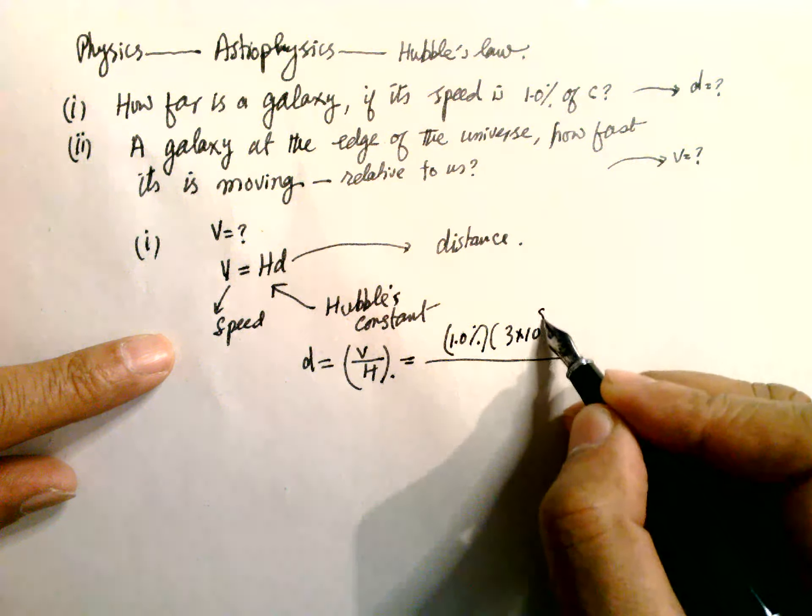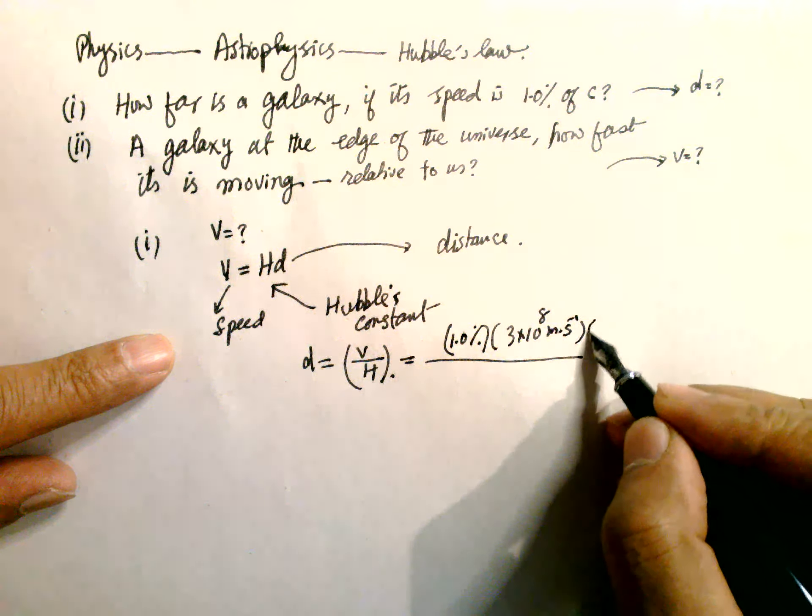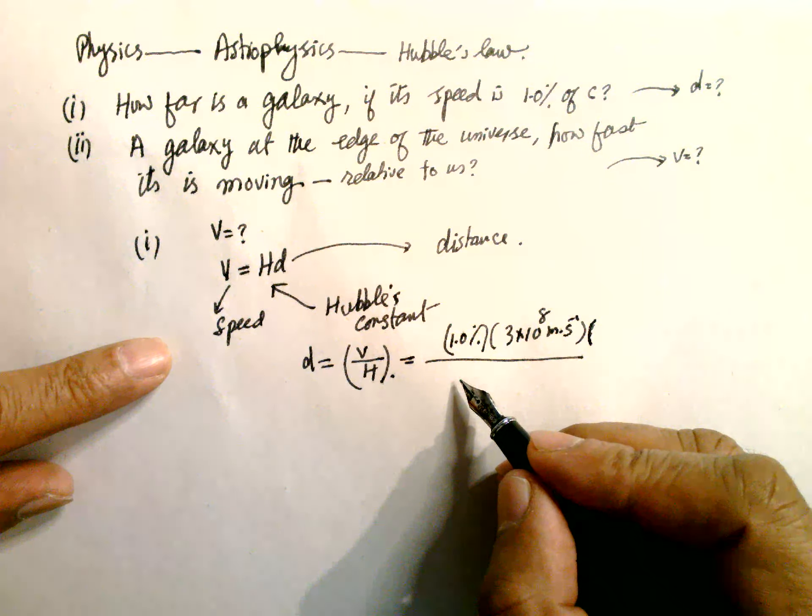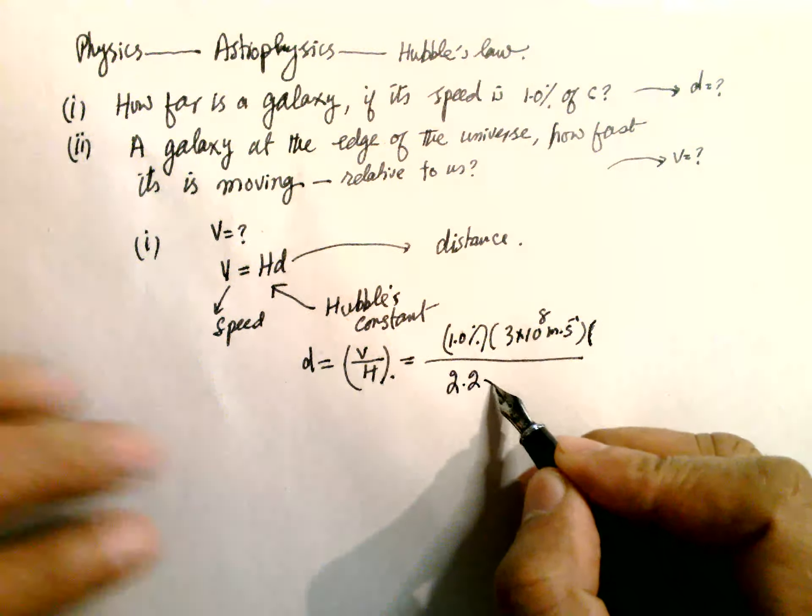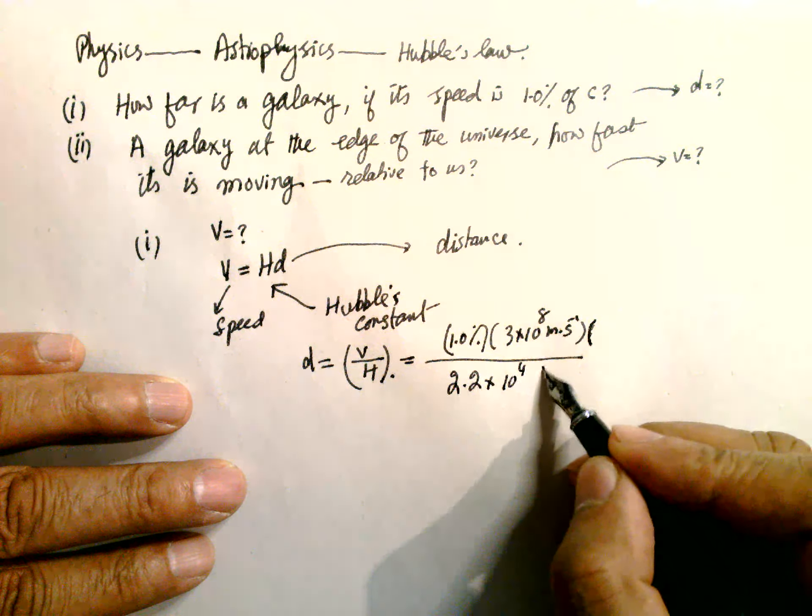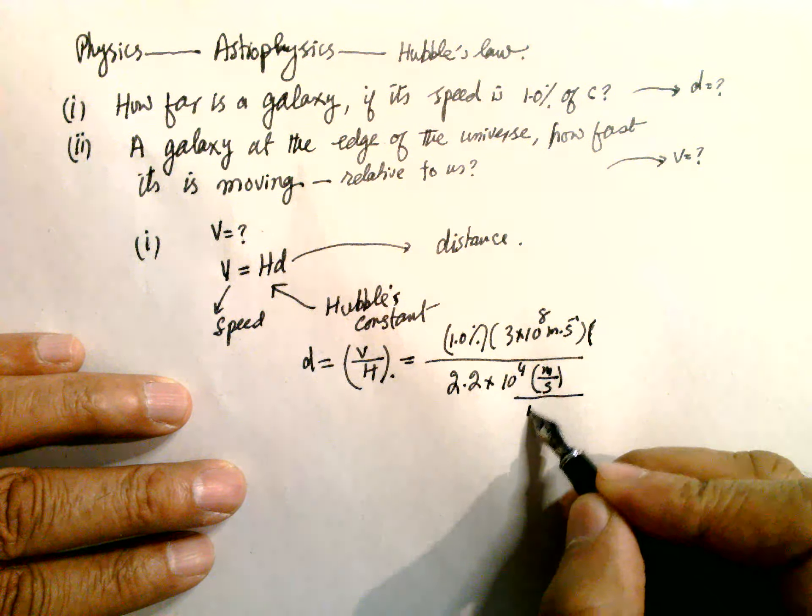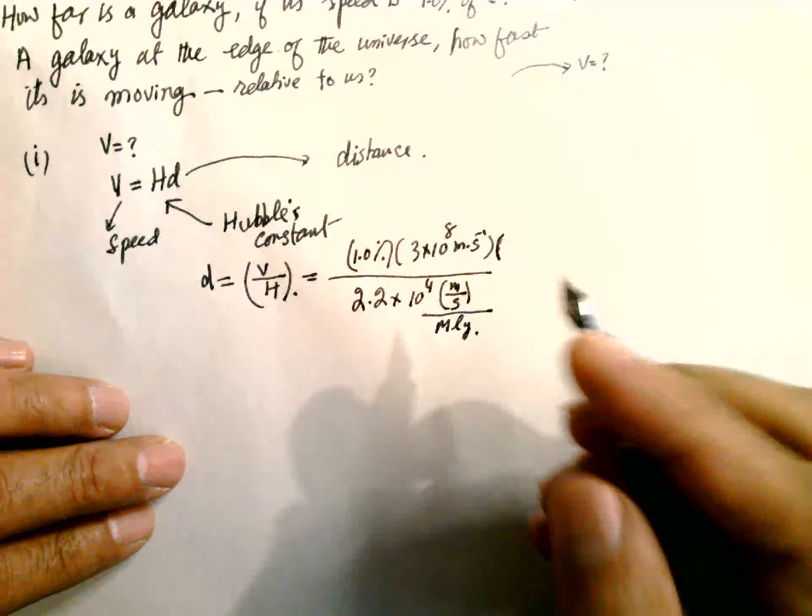which is 3×10^8 meters per second, divided by Hubble's constant. Hubble's constant equals 2.2×10^4 meters per second per million light years.